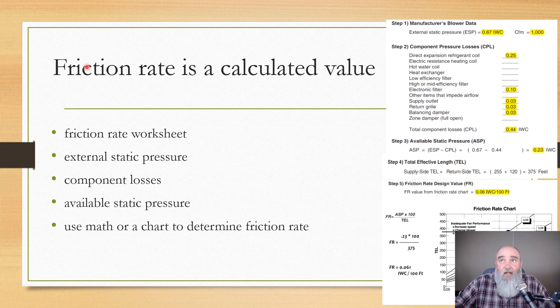So friction rate is a calculated value. Friction rate is something that we are going to use the friction rate worksheet out of ACCA's manual D in order to do it. There is a bunch of information that we are required to gather, and we're going to do a very quick example of it in the next couple of slides. But in order to use the friction rate worksheet, we need to get some external static pressure information from the blower performance chart from the manufacturer for the furnace or the fan coil we're using. We've got to calculate some component losses, which we can see over here.